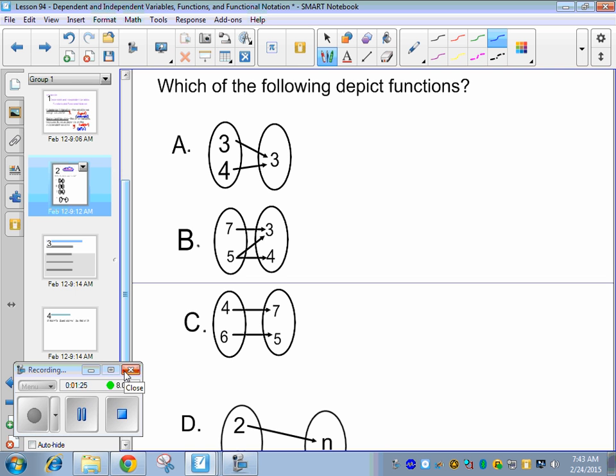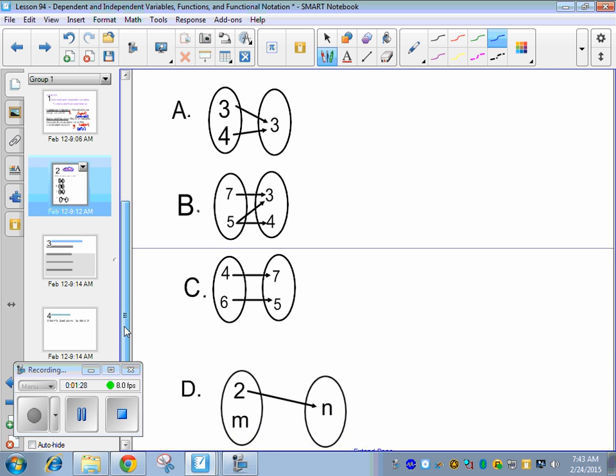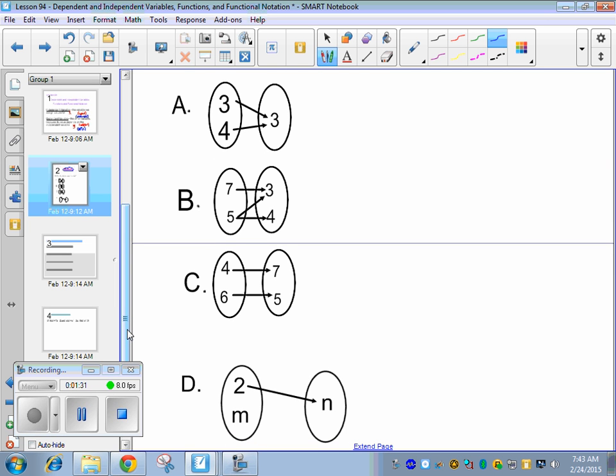So easiest way to explain this is to explain which one is not a function. Actually there are two that are not a function. Can anybody tell me from last year what makes it not a function? Brennan? Yes. Why is B not a function? Go ahead. Exactly. The problem is when you plug one thing in you can't get two things out. So it's because of the five giving you a three and the five also giving you a four. This makes it not a function.